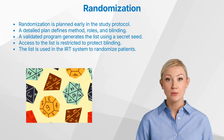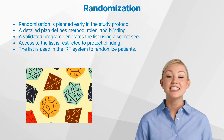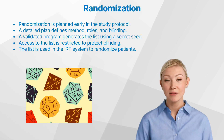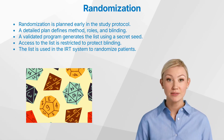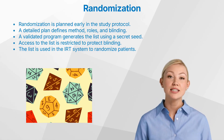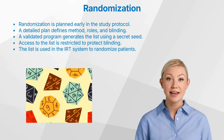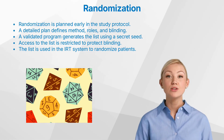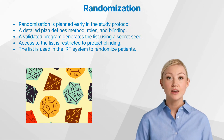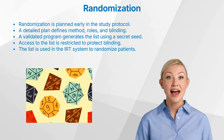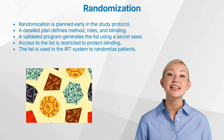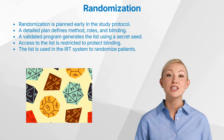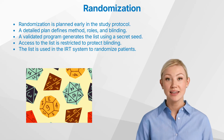Next comes the randomization plan — a separate, detailed document that describes the exact procedure used to generate the randomization list. It includes the randomization algorithm, often block randomization to keep treatment group sizes balanced, and outlines any stratification parameters. It also clearly defines roles and responsibilities, like who will generate the list, who will have access to it, and how blinding and emergency unblinding will be handled. The plan often includes a dummy list as an example of what the real list will look like.